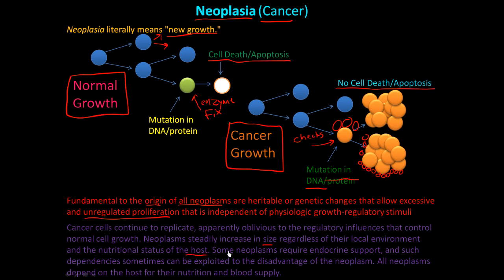Neoplasms grow regardless of the nutritional status of the host. Cancer doesn't care if you're malnourished — it will keep growing and steal nutrition from adjacent cells. And then it needs blood supply, so angiogenesis happens to feed this new cancer. Some neoplasms require endocrine support, and if that's the case, treatments can be designed around halting or retarding that endocrine-dependent growth. All neoplasms depend on their host for nutrition and blood supply.